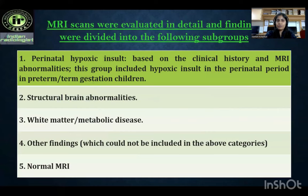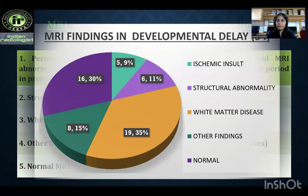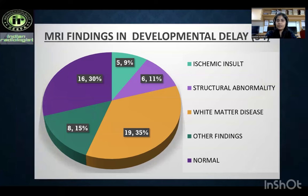There are five groups. First is perinatal hypoxic insult, based on clinical history and MRI abnormalities, including hypoxic insult in the perinatal period in preterm or term gestational children. Second is structural brain abnormalities. Third is white matter or metabolic disease. Fourth is other findings. Fifth is normal MRI. In developmental delay, 9% of cases are systemic insult, 11% are structural abnormality, 35% are white matter disease, 15% are other findings, and 30% are normal MRI.